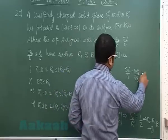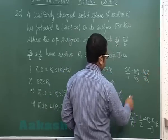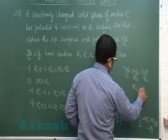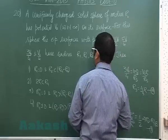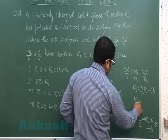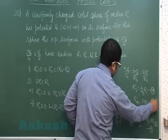Now 3V naught by 4 would be KQ by R3, and KQ can be written as V naught into R by R3, so R3 comes out to be 4 by 3R. That's equation number 3, and V naught by 4 likewise R4 would be 4 times R, that's equation number 4.